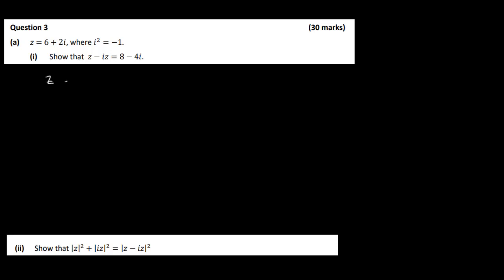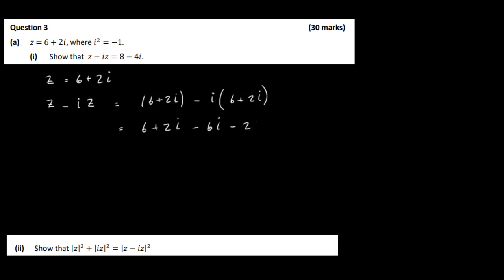So we know that Z is equal to 6 plus 2i. We've got to do Z minus i times Z. So Z is 6 plus 2i, minus i times 6 plus 2i. That will give us 6 plus 2i minus 6i minus 2i squared, which is equal to 6 plus 2i minus 6i, giving minus 4i. And i squared gives us minus 1, so minus 1 times minus 2 is plus 2. So we end up with 8 minus 4i. QED.